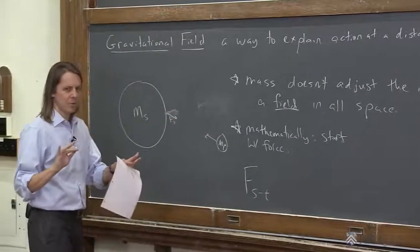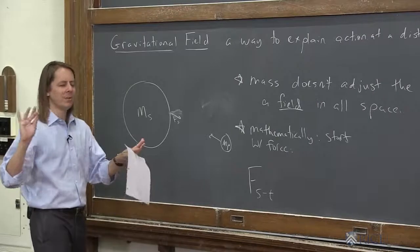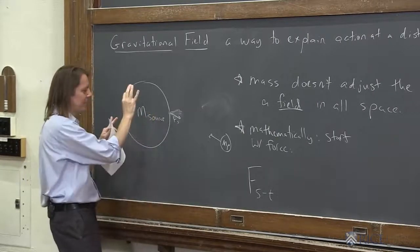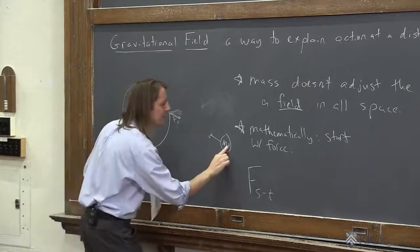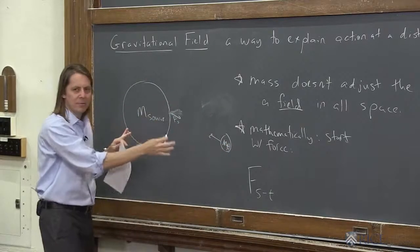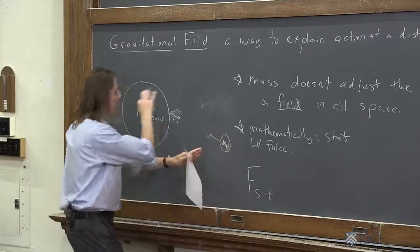So the book we use, and I think this is a good way to break away from just thinking about the sun and planets. This is the source mass. This will be the big fixed mass that's creating the field, and this will be the test mass. This is the little mass that's experiencing the field. Now it's true that this makes a field that this experiences as well.